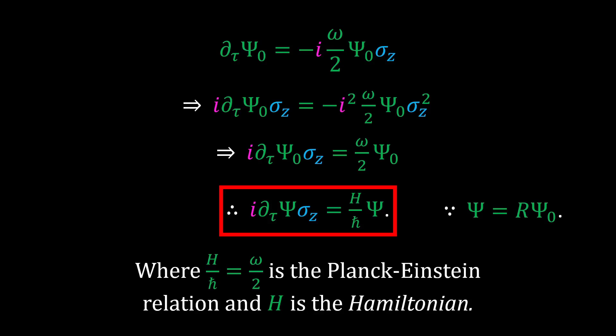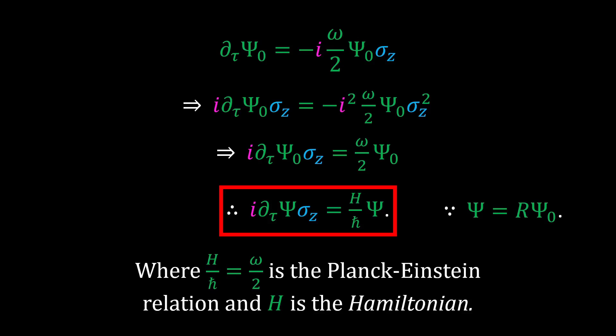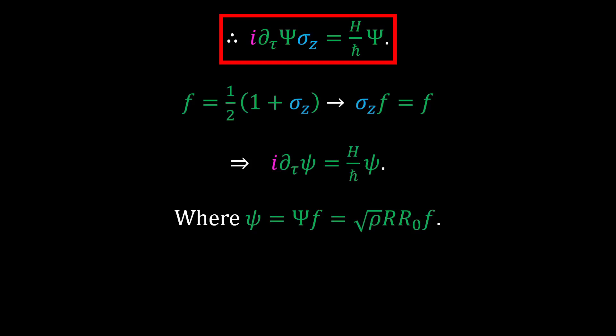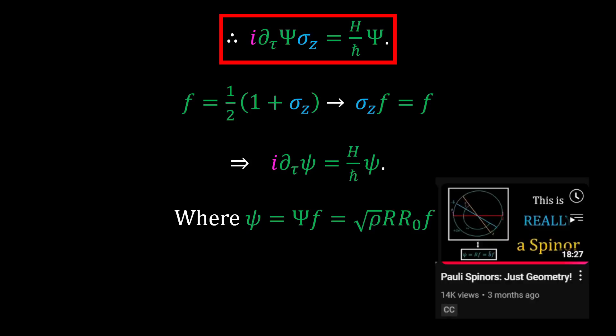An interesting thing to note is that rather than identifying quantum operators like in the traditional formalism, the correct equation falls out simply from the geometry. For those of you unfamiliar with geometric algebra, I could understand you also being confused about the vector sigma z existing on the right-hand side of the Schrödinger equation. The traditional formalism's Schrödinger equation can be recovered by the introduction of a projector f, which absorbs the sigma z. The interpretation and use of this projector is more thoroughly discussed in my Pauli spinor video, so I recommend that you watch that.